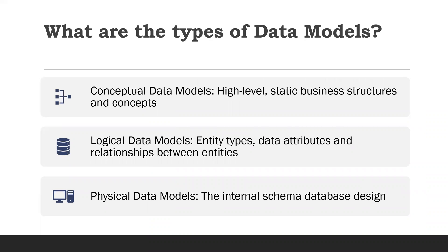What are the types of data models? There are three types: conceptual data models, logical data models, and physical data models. Conceptual data models are also referred to as domain models and offer a big-picture view of what the system will contain, how it will be organized, and which business rules are involved. They are usually created as part of gathering initial project requirements and typically include entity classes, their characteristics and constraints, and the relationships between them, along with relevant security and data integrity requirements.